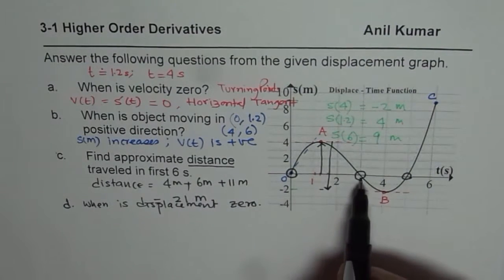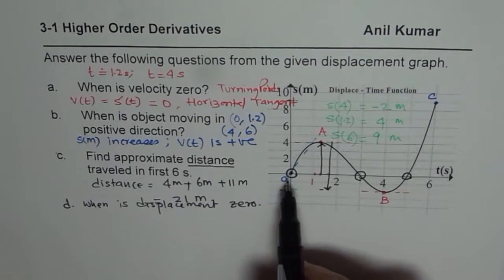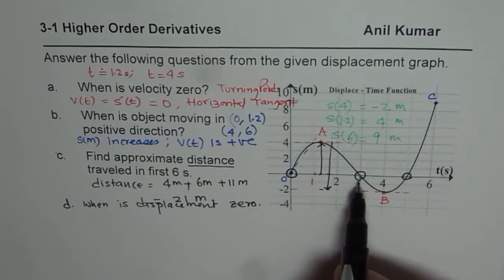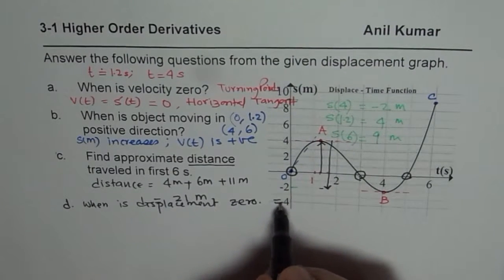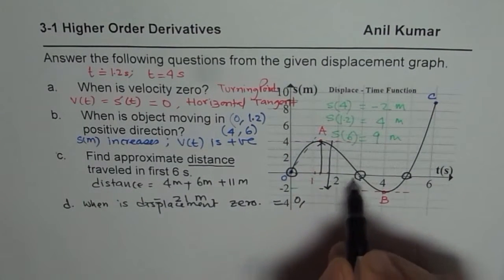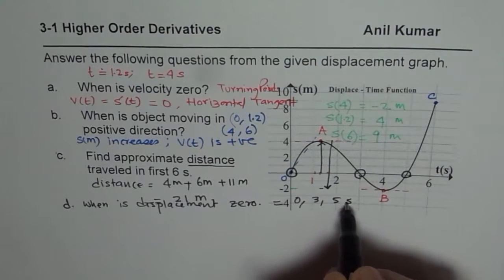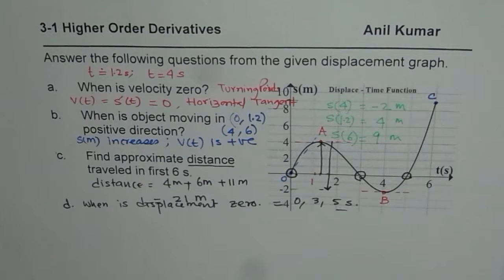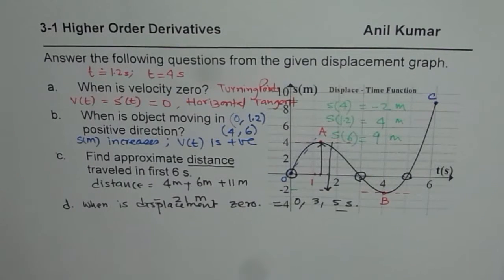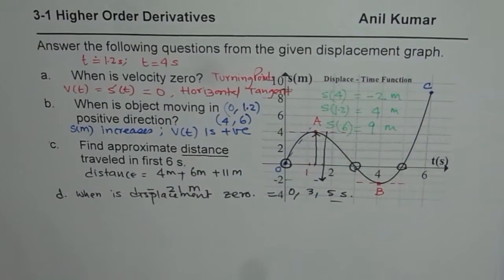So whenever the displacement is 0, you can assume that the particle returns to its original position. Right? So it is 0, the answer for you is at t equals to 0, t equals to 3, and at t equals to 5 seconds. That is the answer. So that is how such questions should be answered. I hope that helps. Thank you and all the best.